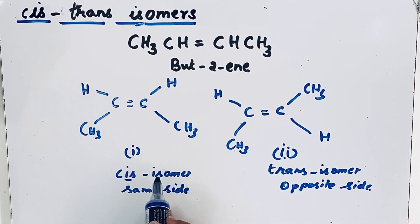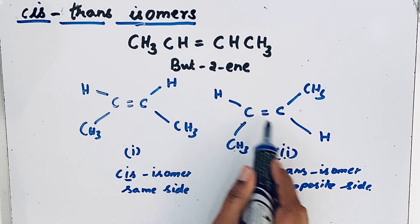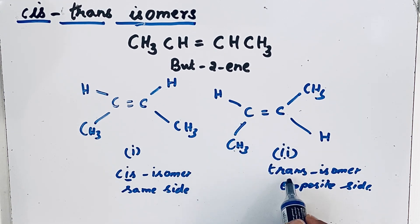So if identical atoms are on the same side of the double bond we called cis isomer and if identical atoms are on the opposite side, then we called trans isomer. Thanks for watching.